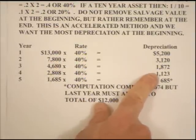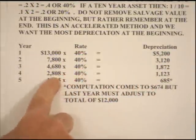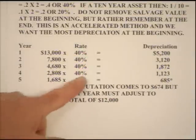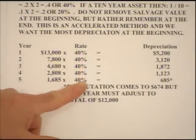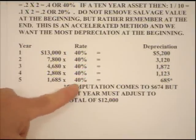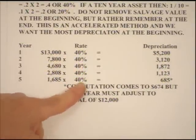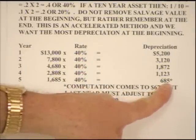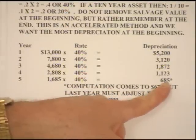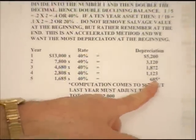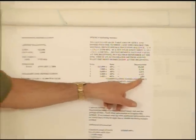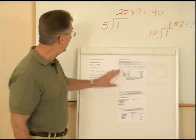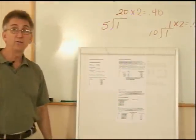We get to year five. We subtract the 1,123 from the 2,808, and we start off with 1,685. 40% of this is $674. Why do I have 685 here? Because this is the fifth and final year, and this has to total $12,000. So this is kind of like a plug in the final year. We get everything else. And that's how the double declining balance works.